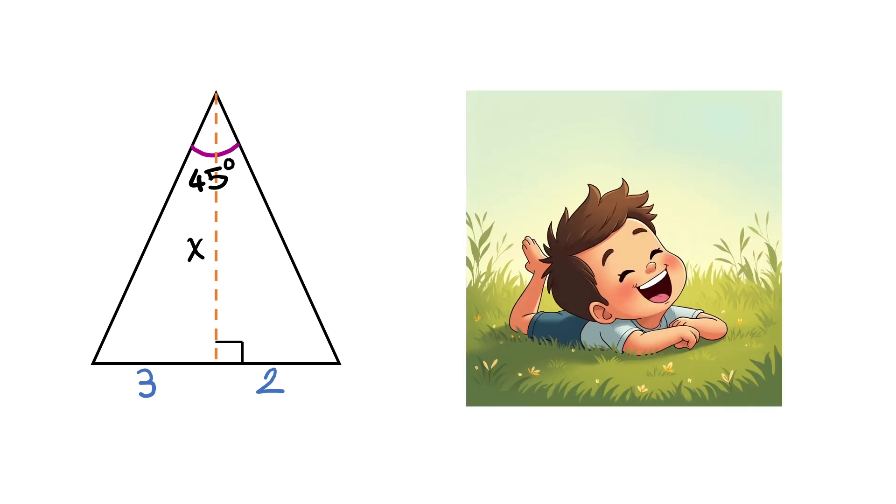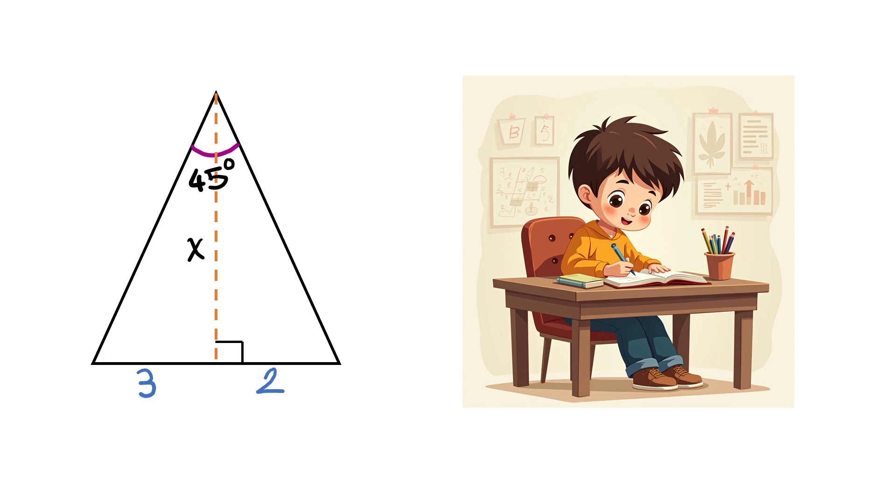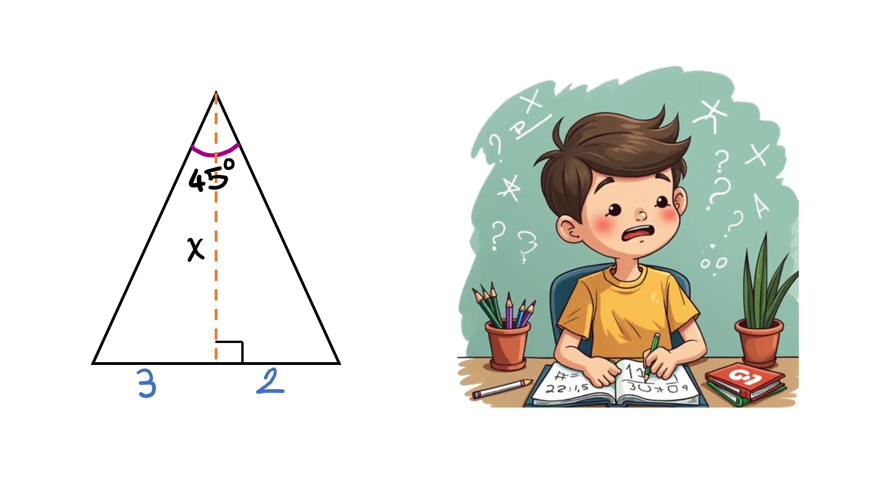This question looks so simple at first glance, but as we start solving, you'll see how tricky it actually is. We have a triangle, whose this angle is 45 degree, and this length is 5 units.